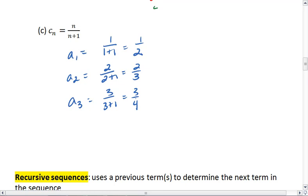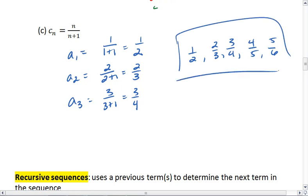Hopefully you're picking up on this pattern. The numerator and the denominator increase by 1 each time. So I get 1 half, 2 thirds, 3 fourths, 4 fifths, 5 sixths. And that's my first five terms of that sequence.